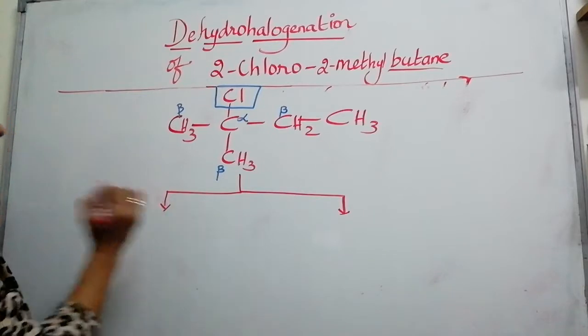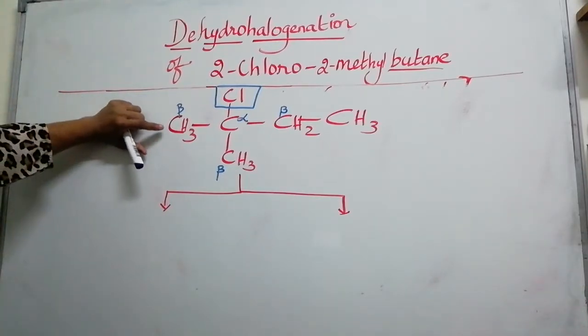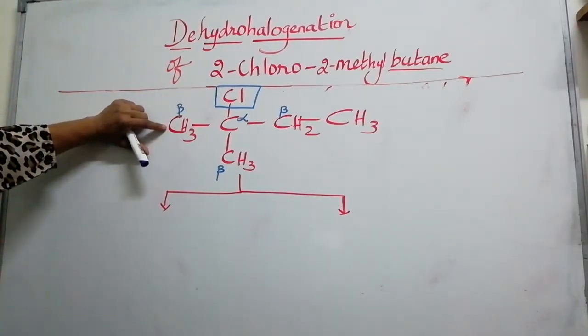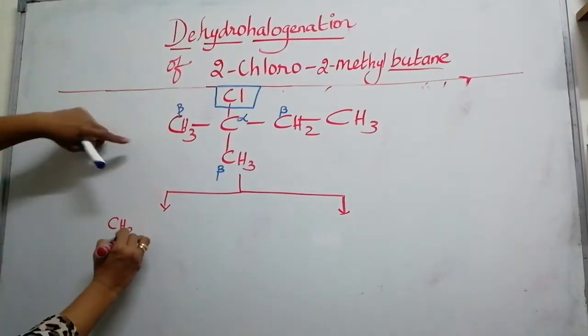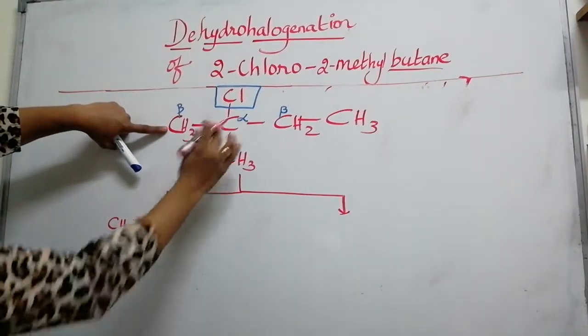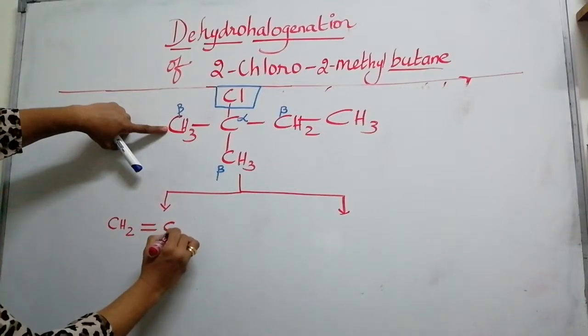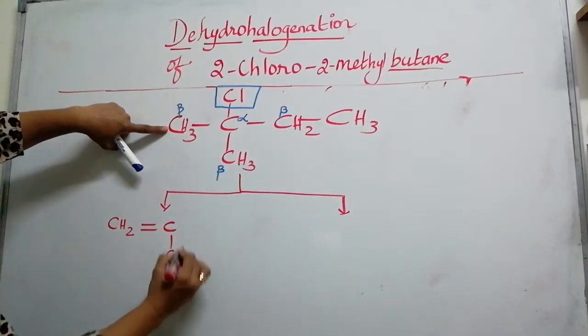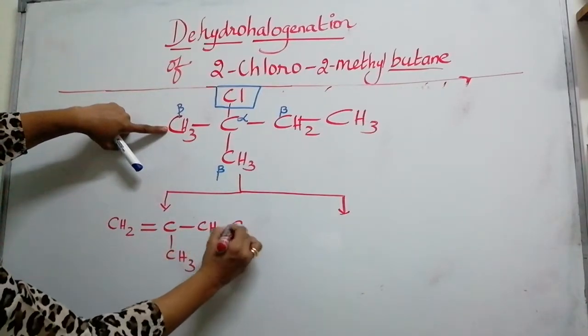The two products are first removing from here one of the hydrogen and halogen we get CH2. There is a double bond formed between alpha and beta. Then carbon with CH3 and then CH2 CH3.